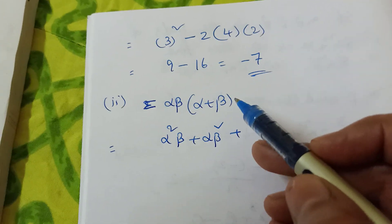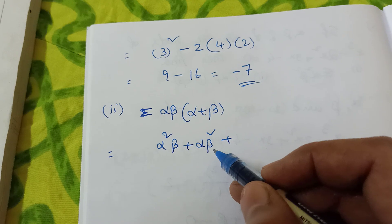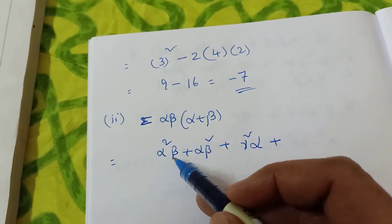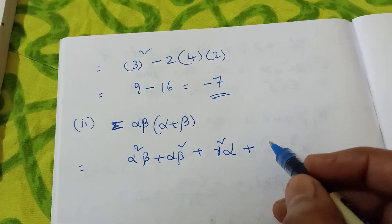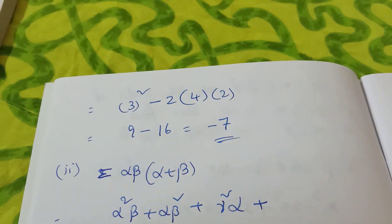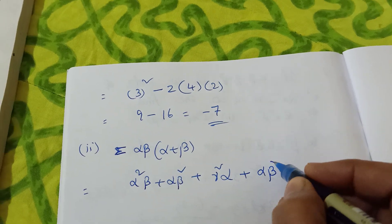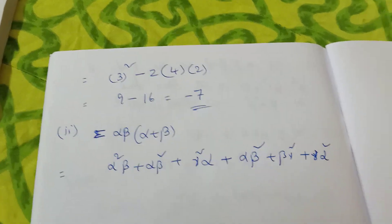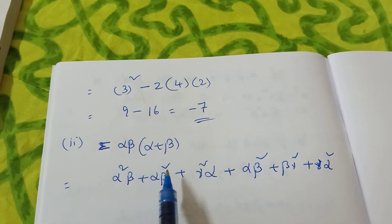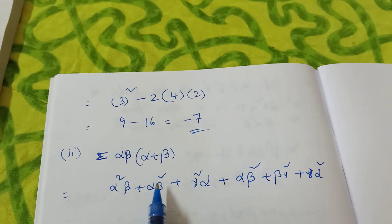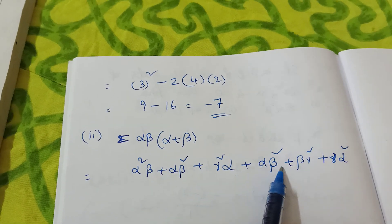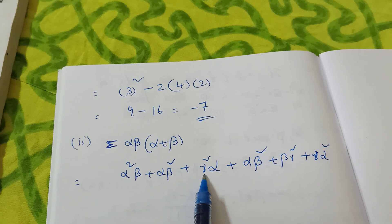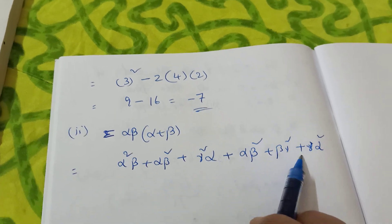So in the next terms — Sigma gives 3 terms when expanded: Alpha²·Beta plus Alpha·Beta², then Beta²·Gamma plus Beta·Gamma², then Gamma²·Alpha plus Gamma·Alpha². Here 6 terms will be there. You can also group them: Alpha·Beta² plus Beta·Alpha² — like that every term you write. Gamma²·Alpha and Gamma·Alpha² — similarly all terms come out. So when you split them, you will get 3 plus 3 alpha beta gamma terms.